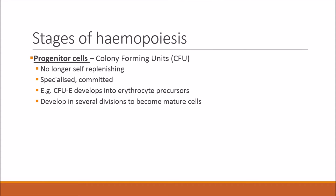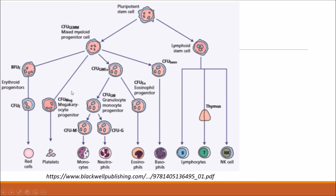In the different stages of haemopoiesis you get progenitor cells, which are the colony forming units. These are no longer capable of self-replenishing — they are specialised and committed. An example is CFU-E, which stands for colony forming unit erythrocyte. Another example is CFU-MEG, the colony forming unit megakaryocyte progenitor.